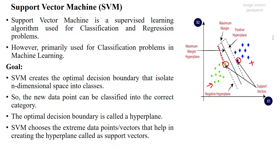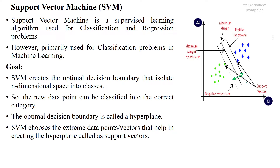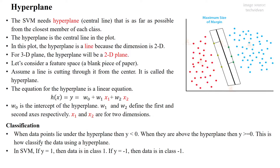Through the support vectors we draw parallel hyperplanes, which are called marginal hyperplanes. The marginal hyperplane in the negative class is called the negative hyperplane, and the marginal hyperplane in the positive class is called the positive hyperplane. The distance between these two marginal lines is called the marginal distance.